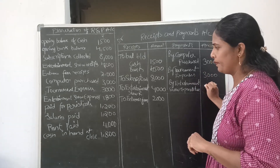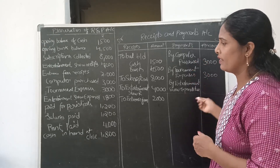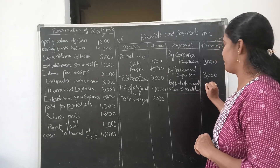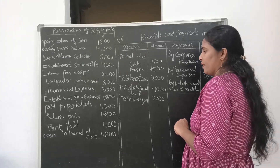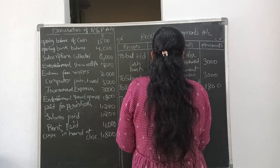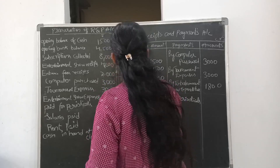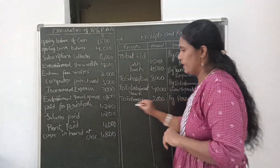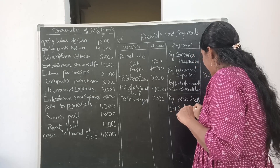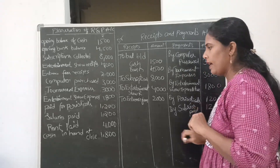This NPO is a club, so entertainment expenses and tournament expenses are present. The amount of entertainment expenditure is 1800. Next, paid for periodicals — 'paid' means payment side, so we write periodicals; the amount is 1200. Salaries paid — we write salaries on the payment side; this is also 1200.